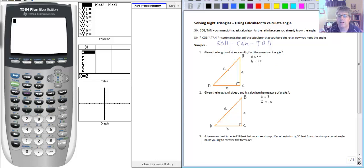So let's take a look at our first sample problem. Given the lengths of sides A and B find the measure of angle B. So if A is 10 and B is 15 and we want to find angle B. So that's our theta unknown. Well our reference angle is B and we have the opposite and the adjacent.